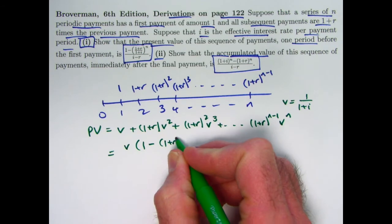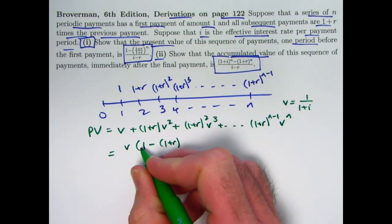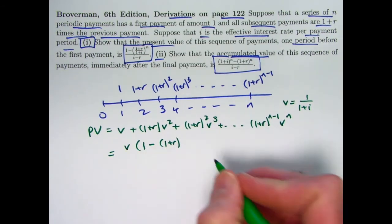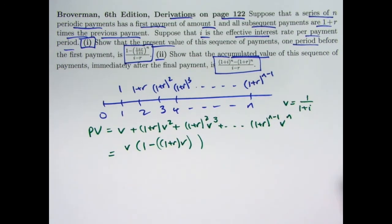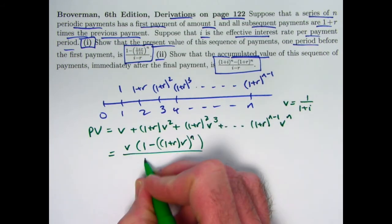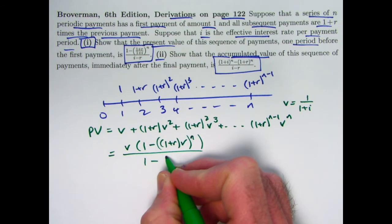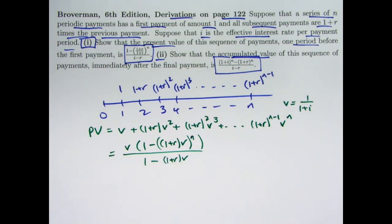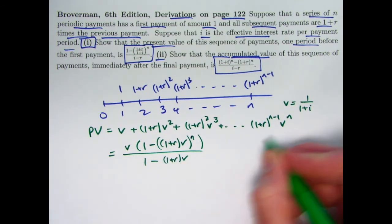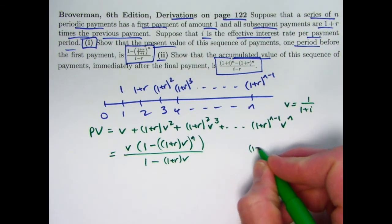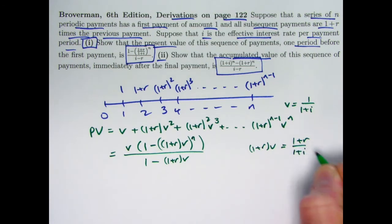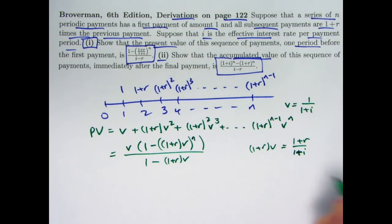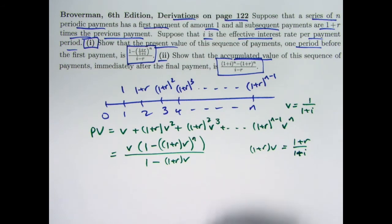So it's going to equal the first term v times, in parentheses, 1 minus the common ratio raised to the n — since there are n payments — all divided by 1 minus the common ratio, which is 1 minus (1 plus r) times v. Remember v is 1 over 1 plus i, so (1 plus r) times v is the same as (1 plus r) over (1 plus i). We want our final answer in terms of just r and i.